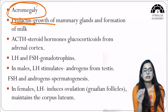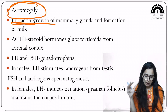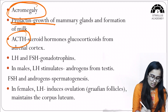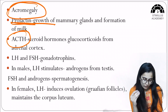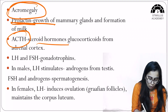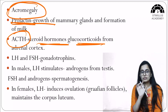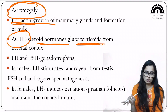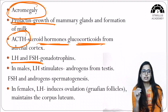Prolactin is also secreted by the anterior pituitary. Its function is the growth of mammary glands and the formation of milk. ACTH — adrenocorticotrophic hormone — acts on the adrenal gland and stimulates the release of steroid hormones called glucocorticoids from the adrenal cortex.